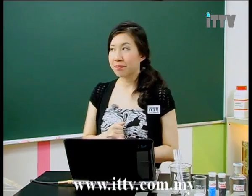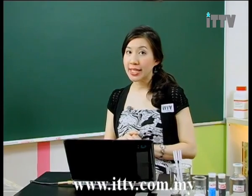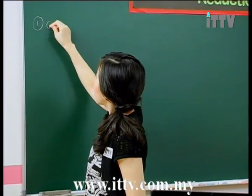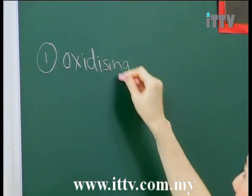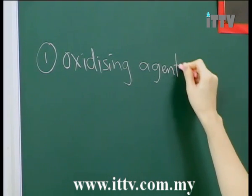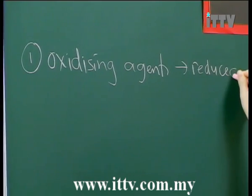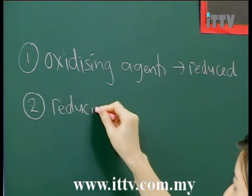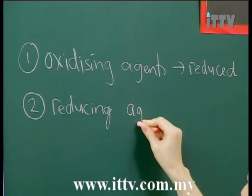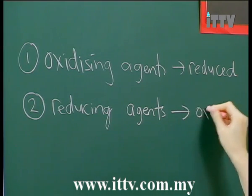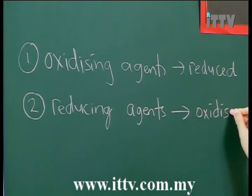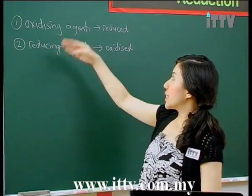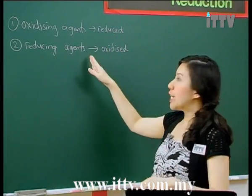The point to remember is: oxidising agents are reduced — they will always undergo reduction. Whereas reducing agents will become oxidised. This process happens simultaneously at the same time. Oxidising agents will be reduced, and reducing agents will be oxidised.